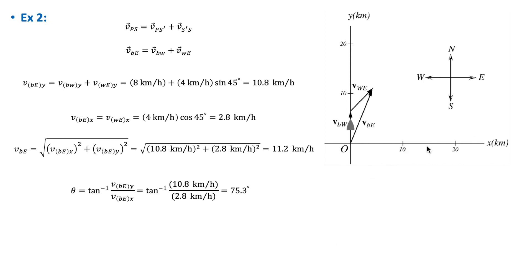Taking east as the positive x direction, we write the equation in component form. V_WE_y equals V_WE times sine 45° (north-east component) and the x component uses cosine 45°. From these components we obtain both the magnitude of the velocity of the boat relative to the earth and the direction of that velocity.